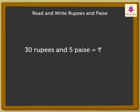First, write the rupee sign. Then, the number 30. Then, a dot. And lastly, write the number 05. We read this as 30 rupees 5 paise.